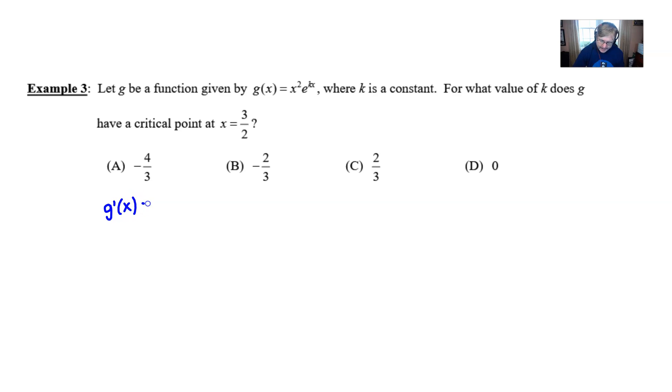So when we do that we have to use the product rule and then we end up getting 2x times e to the kx power add that to x squared and then for the derivative of e raised to the kx you do your derivative of e to the kx which is e to the kx and then you'd have to multiply it by the derivative of kx and if k is a constant we can just put that k in front like that.